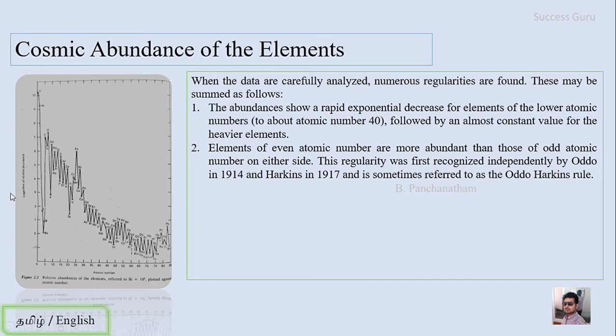You can see here the even atomic numbers, whatever it is from helium to iron, have higher abundance when compared to nearby odd atomic numbers.